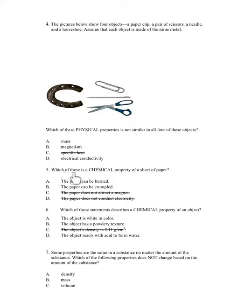Number 5. Which of these is a chemical property of a sheet of paper? A. The paper can be burned. B. The paper can be crumbled. C. The paper does not attract a magnet. D. The paper does not conduct electricity.